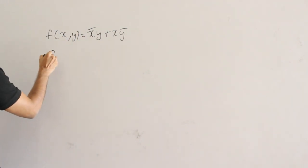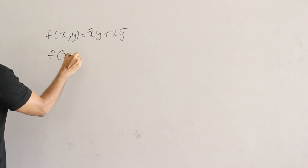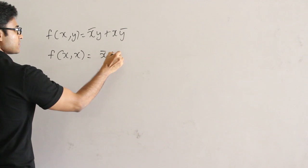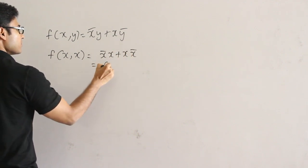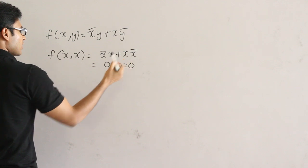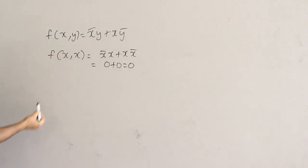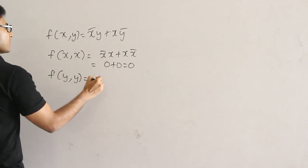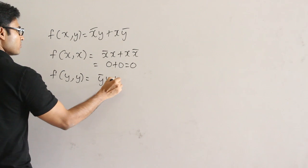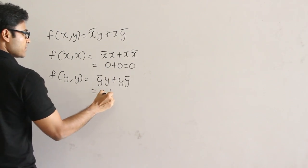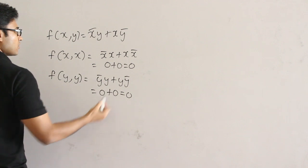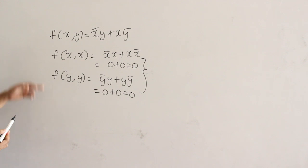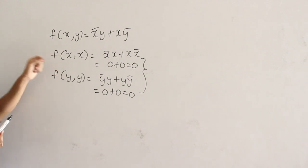Now if I put f(x, x), then what do I get? x' · x plus x · x' which is nothing but 0 plus 0, which is 0. So we didn't get any complement here. Now let's try with y: f(y, y). Then again y'·y plus y·y' — again I get 0 plus 0. So we are not able to get any complement here even substituting x,x and y,y.